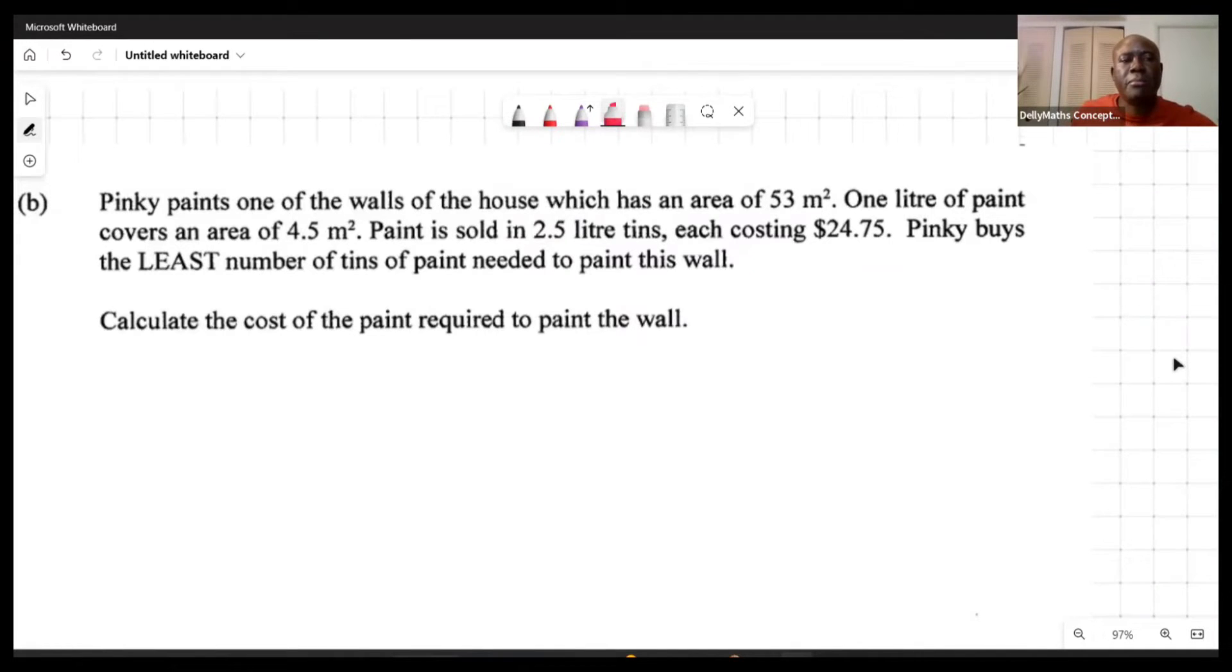Now, Pinky paints one of the walls of the house, which has an area of 53 square meters. So the area that we're thinking about now is a part that is about 53 square meters. Now, we're being told that one liter of paint covers 4.5 square meters. So we're saying now, one liter will cover 4.5 square meters.